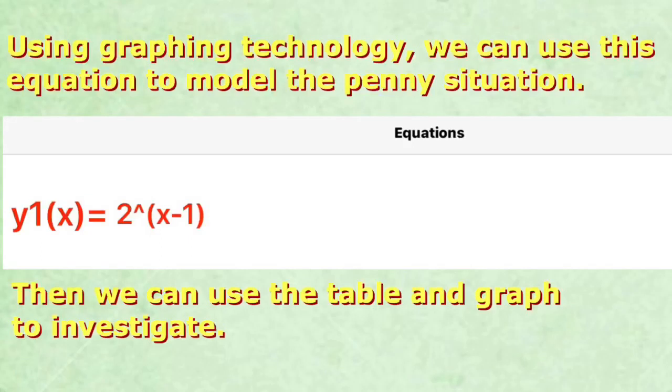The classic question is, which would you rather have: a million dollars, or one penny doubled every day for a month — let's say 30 days, one month. So let's just take a look and see which might be the best choice. Using graphing technology, we can use the equation y equals 2 to the x minus 1 power to model the situation.